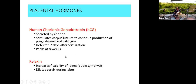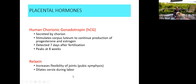HCG is detectable by about seven days after fertilization, peaks around eight weeks, and then once the placenta is stabilized, HCG drops dramatically. Then we have relaxin, which relaxes things. When you're getting close to labor, relaxin is secreted and targets the pubic symphysis to allow it to become more flexible because the pelvis has to move during labor. It also targets the cervix and inferior aspect of the uterus to start to relax and dilate.